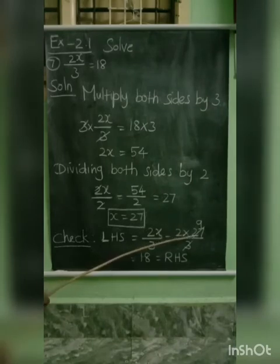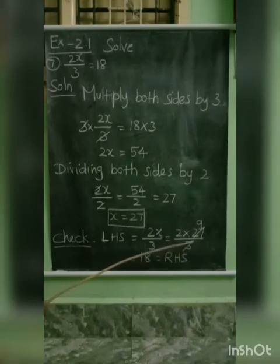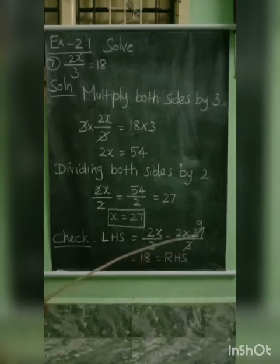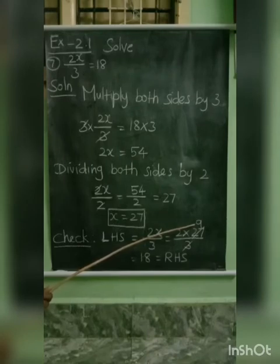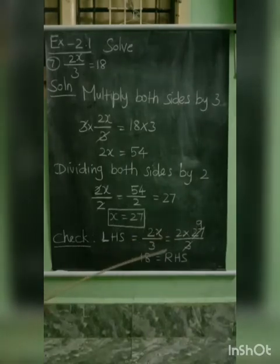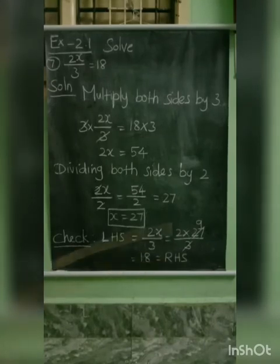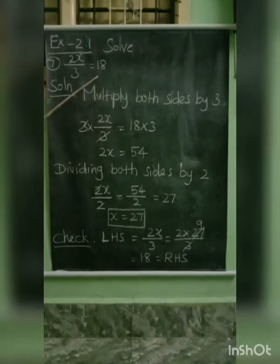2 into 27 by 3. At 27, divide by 3 to get 9. Now, we have 2 into 9. 2 into 9 means your answer is 18. This 18 is the right hand side of the given equation. So, now your answer is proved.